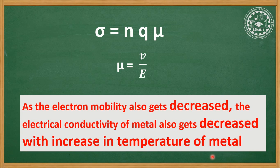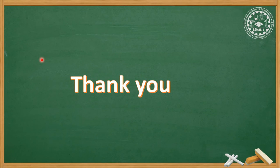Since the electron mobility decreases and N and Q remain unchanged, the electrical conductivity of the metal will also decrease. As you increase the temperature of the metal, the electrical conductivity of the metal will decrease. This is our conclusion: the effect of temperature on the electrical conductivity of metals is that conductivity decreases with increasing temperature. Thank you, dear students.